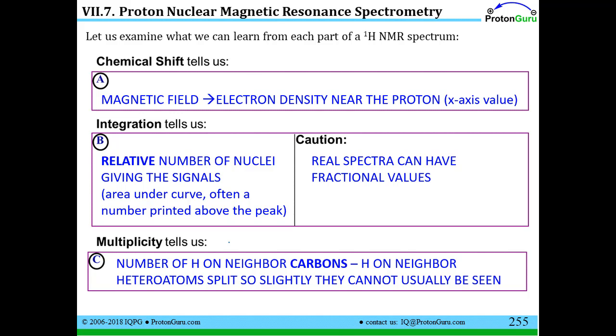Next, we have the multiplicity. Remember, that's just the number of signals into which your resonance is split in response to protons on adjacent carbons. And we talked about the fact that the multiplicity is equal to the number of H's on neighboring carbons plus one.